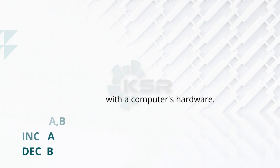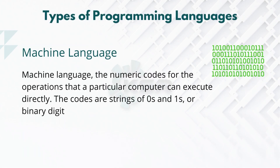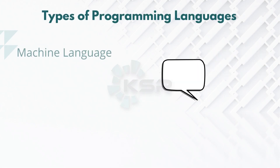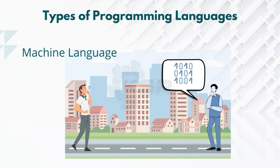Then there is machine-level programming language, which is always in zeros and ones — understood by the machine. So we have human-understandable high-level languages, assembly-level languages which are closer to machine level, and machine level itself. Assembly-level languages are very close to machine level, and you can't use them to write large applications like web applications or very complex programs.